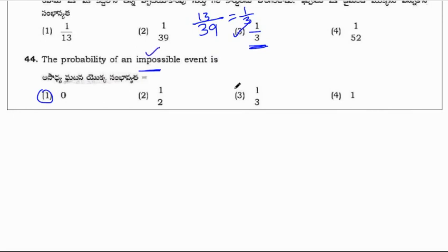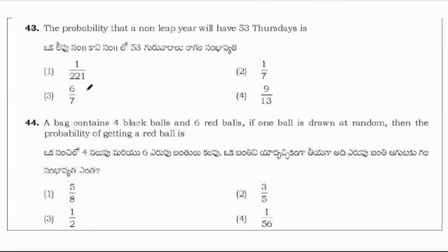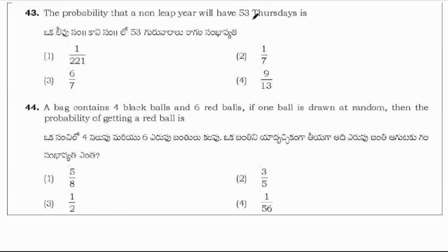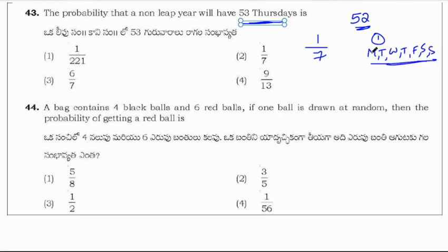The probability that a non-leap year will have 53 Thursdays is 1 by 7. Because in a year, there will be 52 Thursdays, 52 weeks. So 52 Thursdays will be there. In one week, it will be Monday, Tuesday, Wednesday, Thursday, Friday, Saturday and Sunday. So probability of getting a Thursday out of 7 will be 1. So answer is 1 by 7 which is option 2.